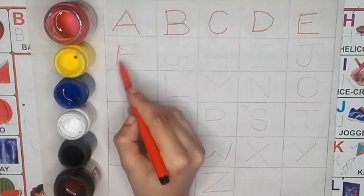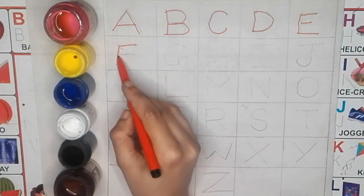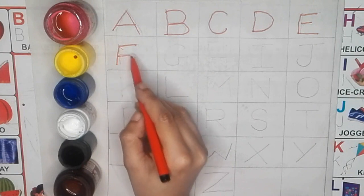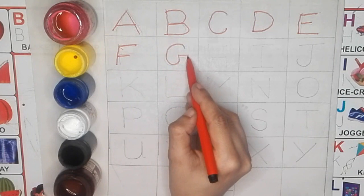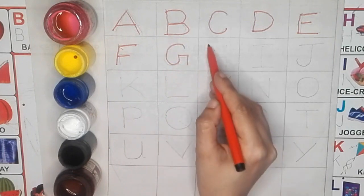F, F for fountain, F for fountain. G, G for grass, G for grass.